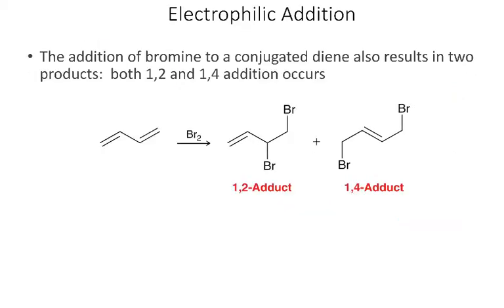We see electrophilic addition not just with HBr, but if we do addition of Br2, we again get 1,2 and 1,4 addition when dealing with conjugated dienes.